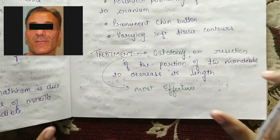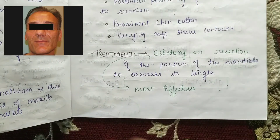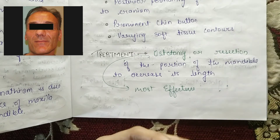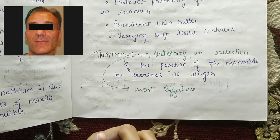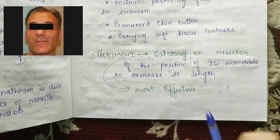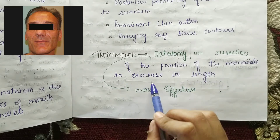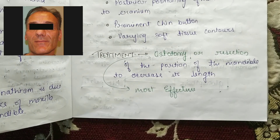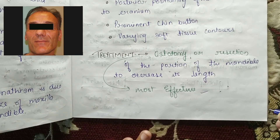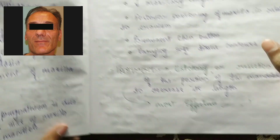Coming to the treatment: you need to remember which diseases are associated with macrognathia. The most effective treatment is osteotomy and resection of a portion of the mandible to decrease its length.